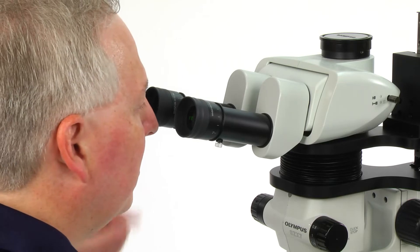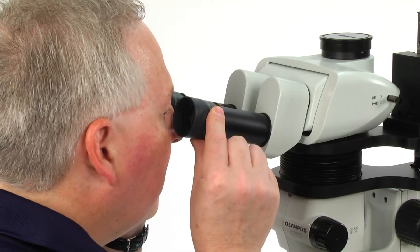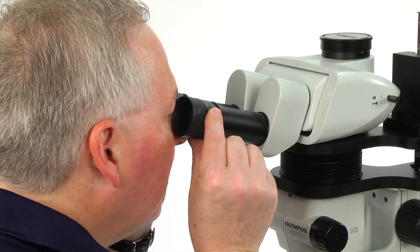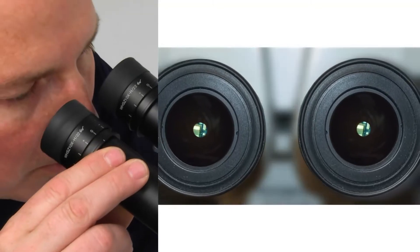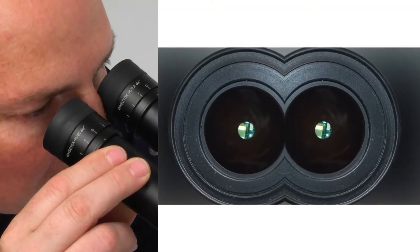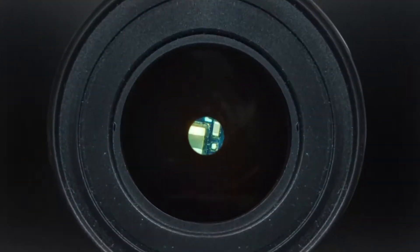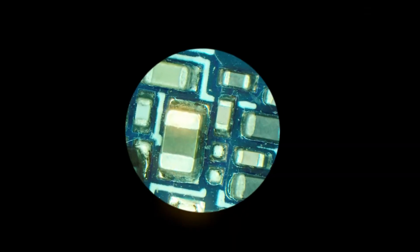While holding the left and right observation tubes with both hands, look through the eyepieces. Adjust for binocular vision by moving the eyepieces together or apart until the left and right fields of view merge to form a single image.